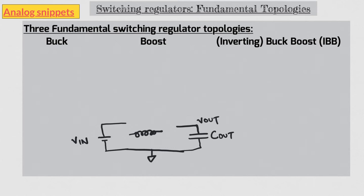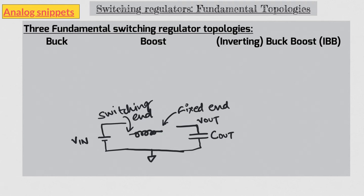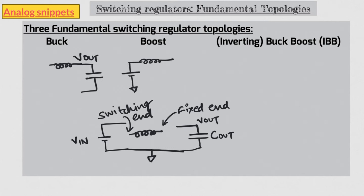Let's call one end of the inductor the fixed end and the other end the switching end. If the fixed end is connected to V_out, that is our buck converter. If the fixed end is connected to V_in, that will be the boost converter. And if the fixed end is connected to ground, that will be buck-boost. In fact, looking at the fixed end of the inductor is the easiest way to identify which type of regulator topology it is: if the inductor is directly connected to output it is buck, if it is directly connected to input it is boost, and if it is directly connected to ground it is inverting buck-boost.